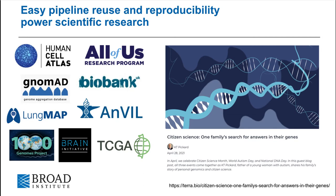The pipelines in WARP or their predecessors have powered many of the recent large-scale projects in the United States. On the opposite end of the scale spectrum, when made accessible to the community, the same production quality pipelines that can process hundreds of thousands of samples can also empower individual scientists in their own research. We were so proud to see a WARP pipeline used recently by a citizen scientist, a father seeking to understand the genetic cause of his daughter's autism.